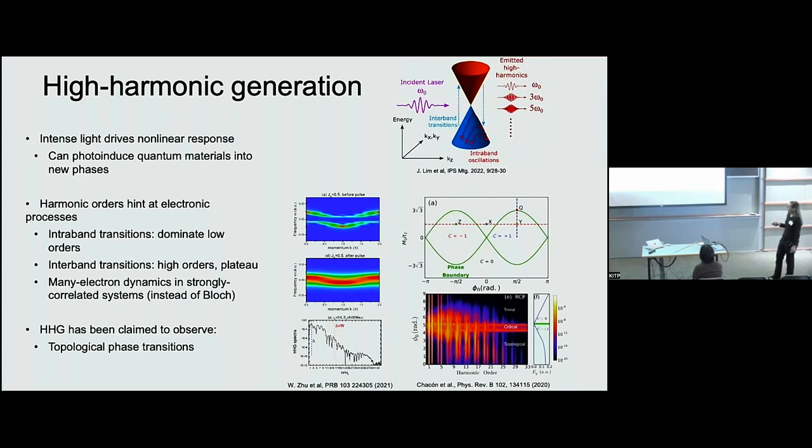In the realm of topology. It's also been claimed high harmonic generation has also been claimed to observe topological phase transitions. So in this work they look at a Haldane model and they tune. I believe this contour is along this line. So in the Haldane model there's a trivial phase outside of this sort of figure eight or infinity symbol with a Chern number of zero.